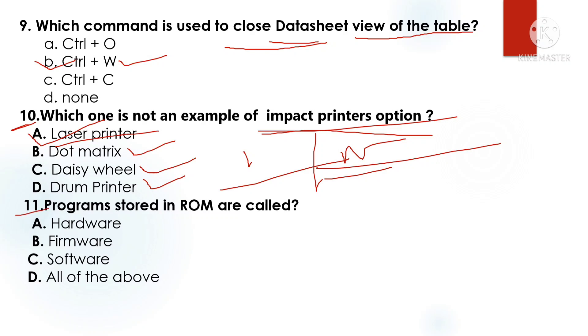Question 11: Programs stored in ROM are called what? Programs stored in ROM — Option B: Firmware.